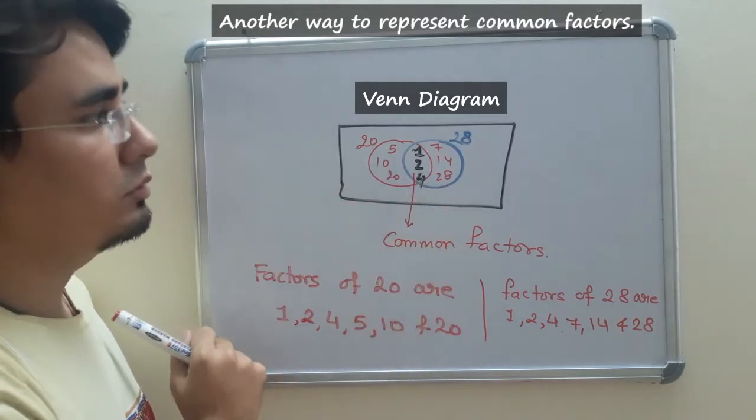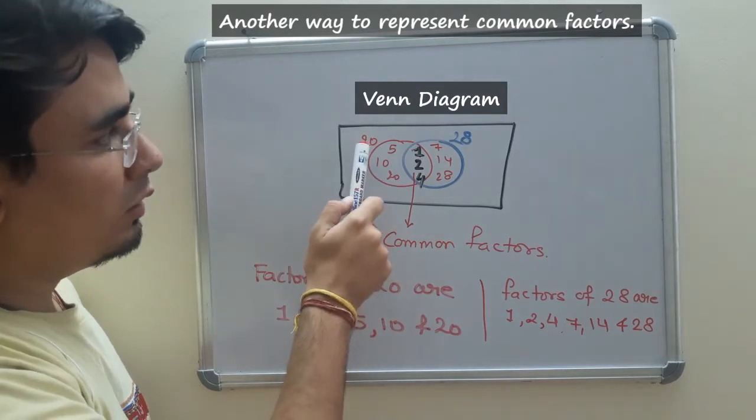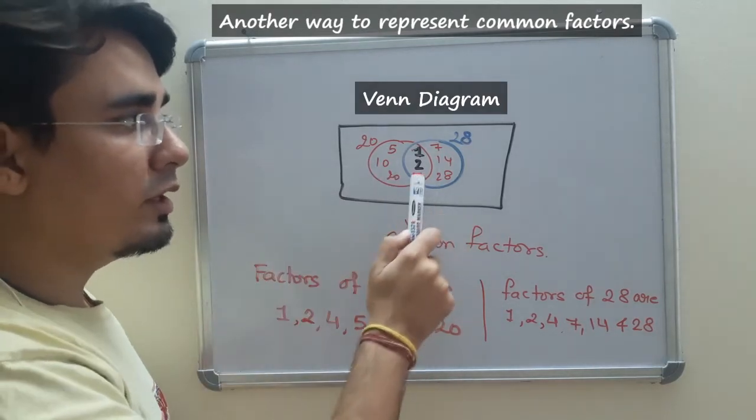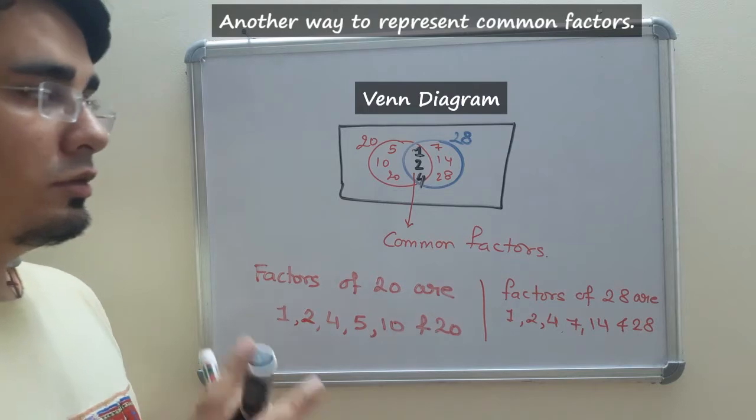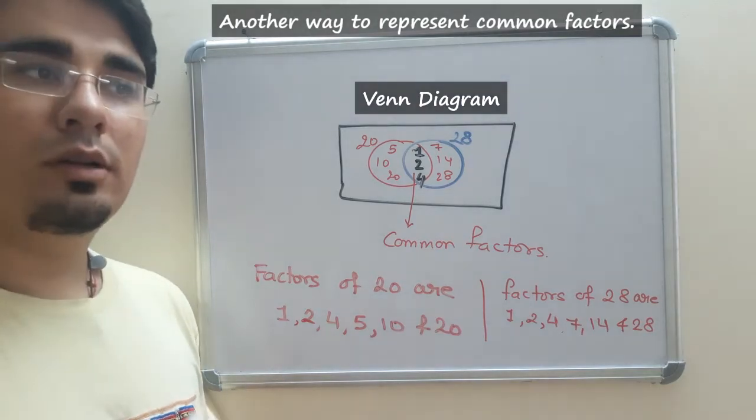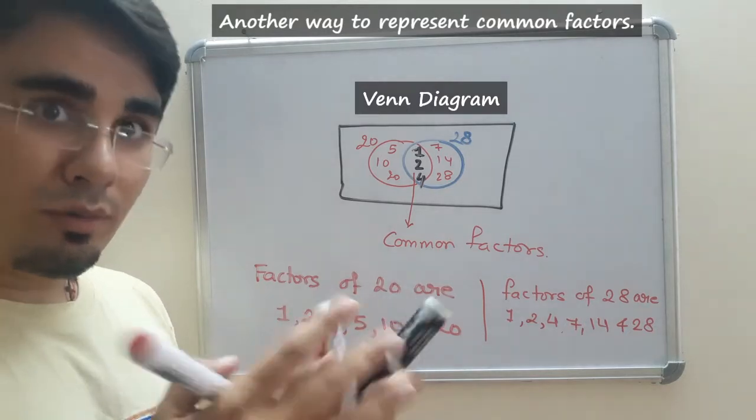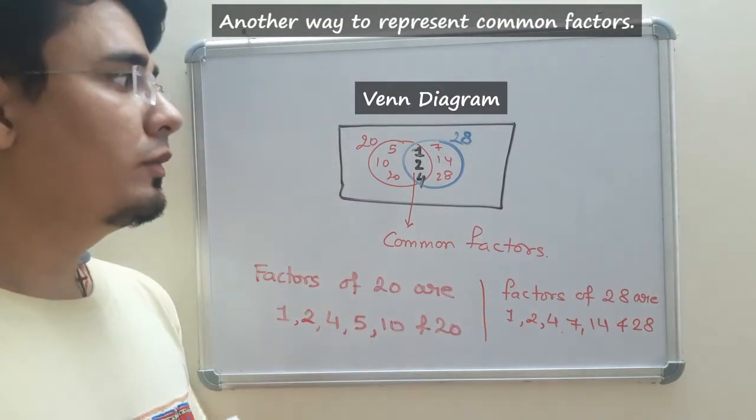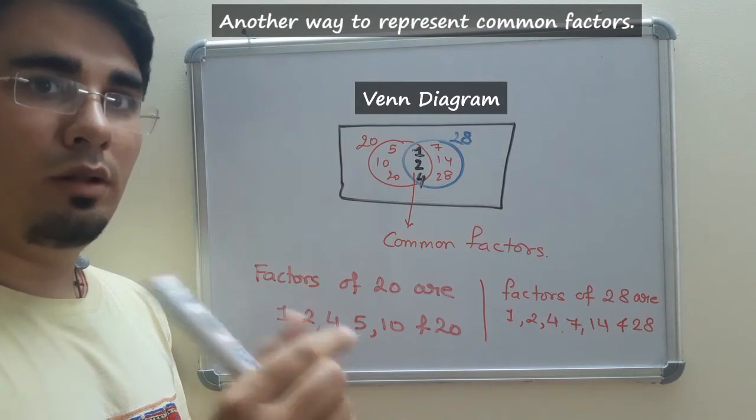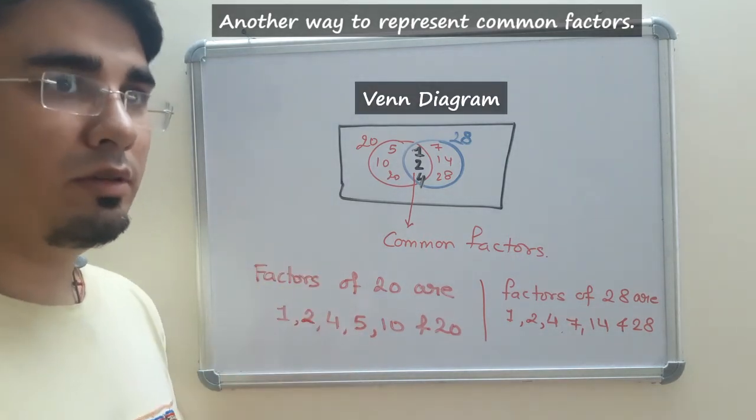And 28 is divisible by 2 also. 14. And 20 is divisible by 4. And 28 is also divisible by 4. So in this way, common factors will let you know whether two numbers or three numbers also have a common divisible. By which number it will be commonly divisible.